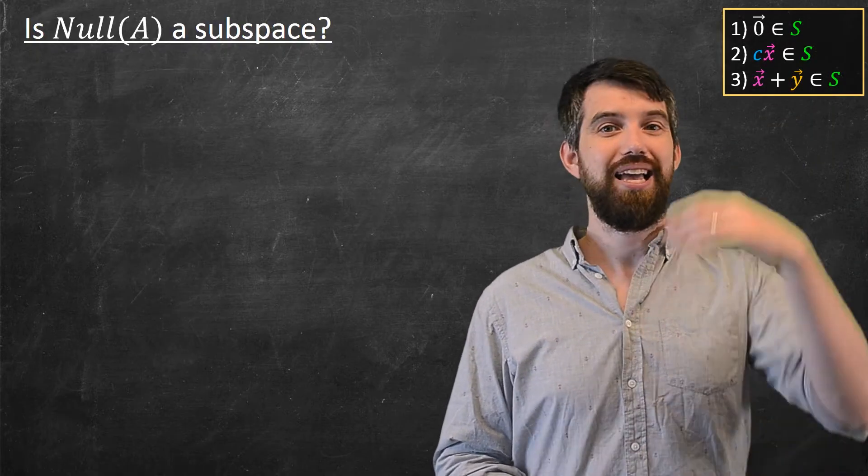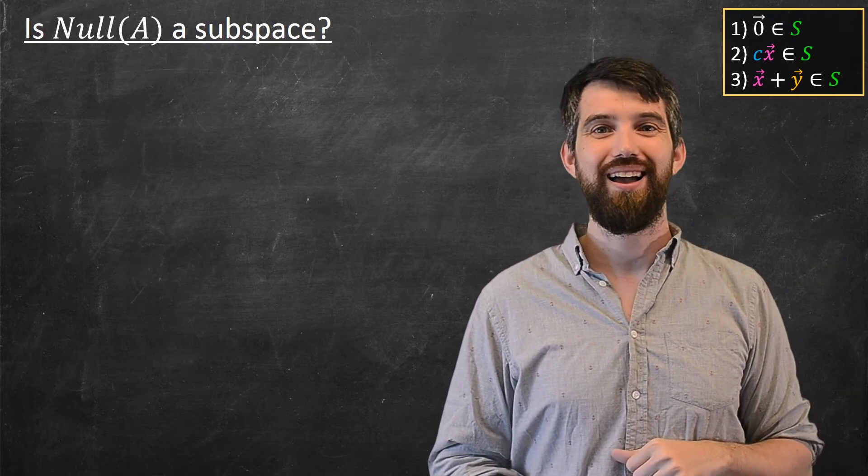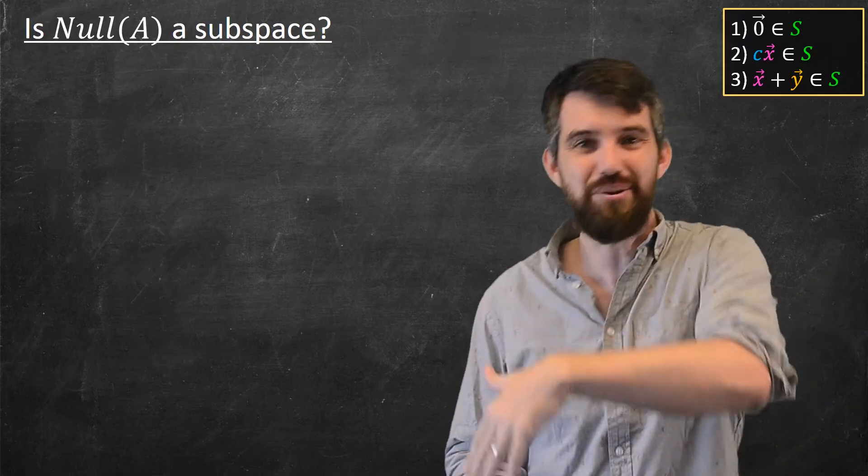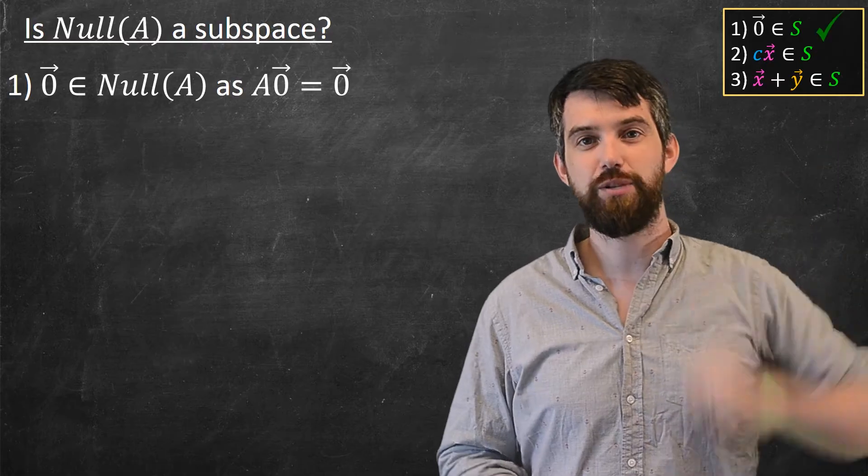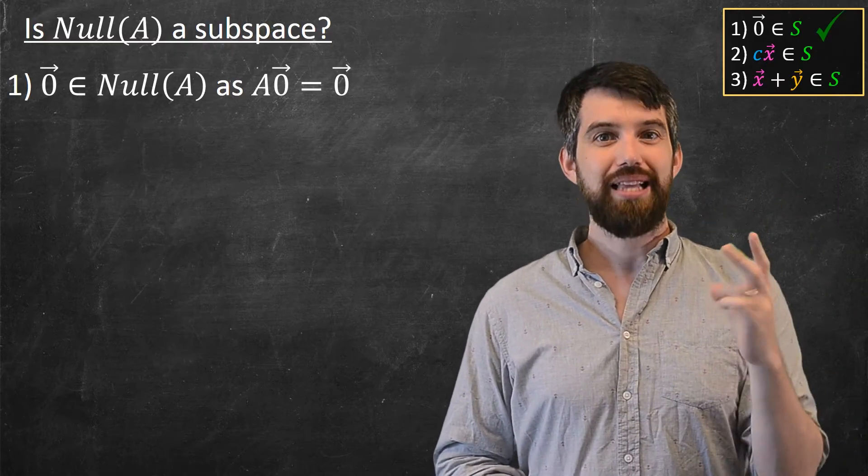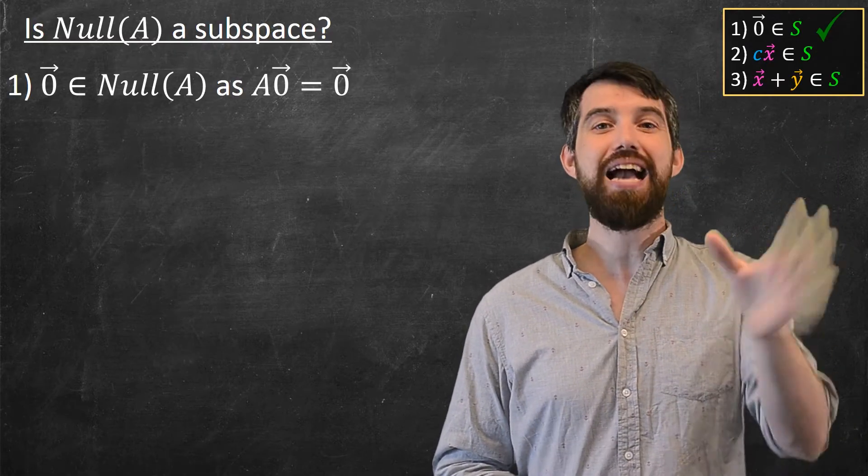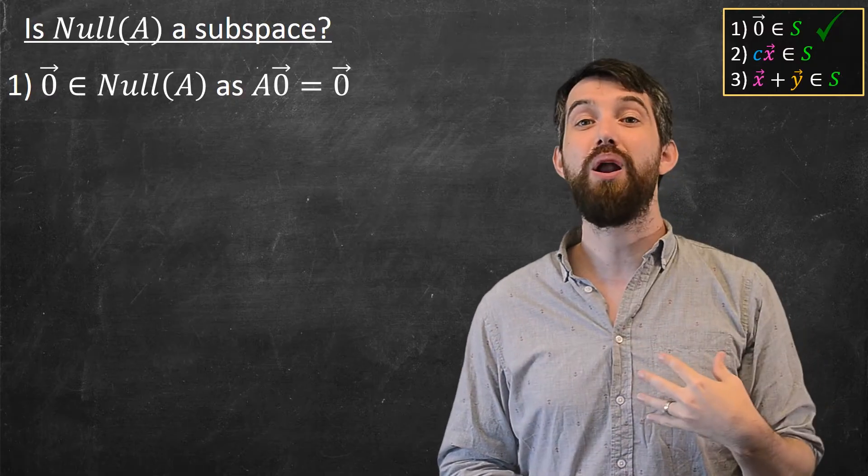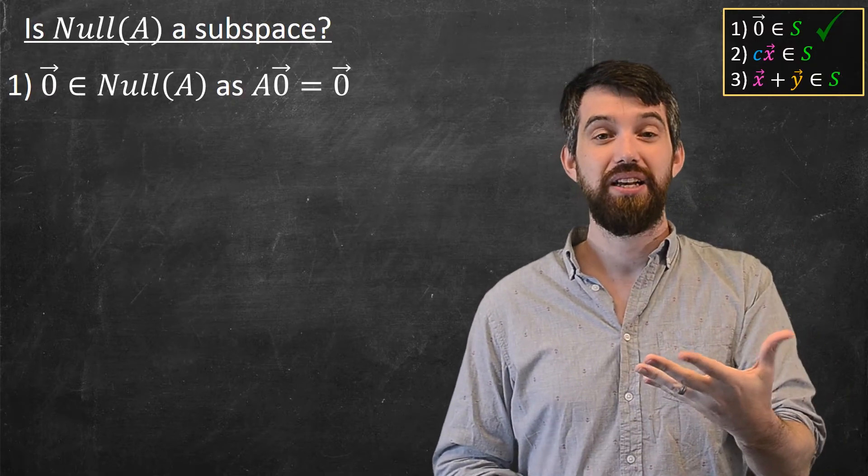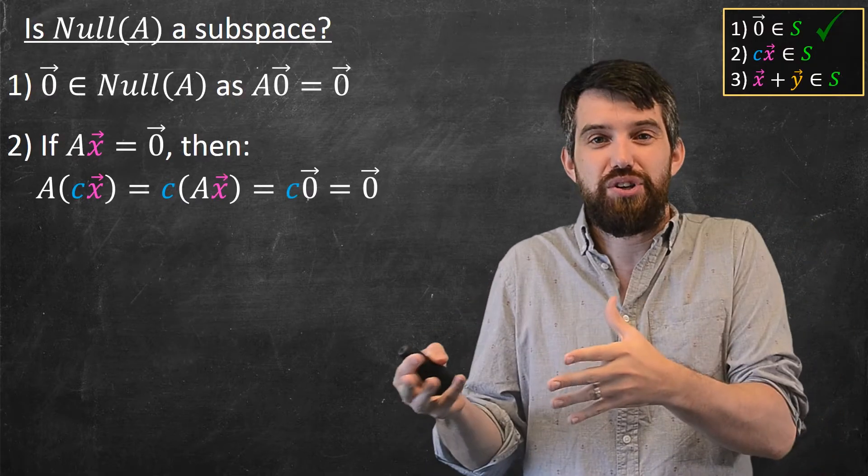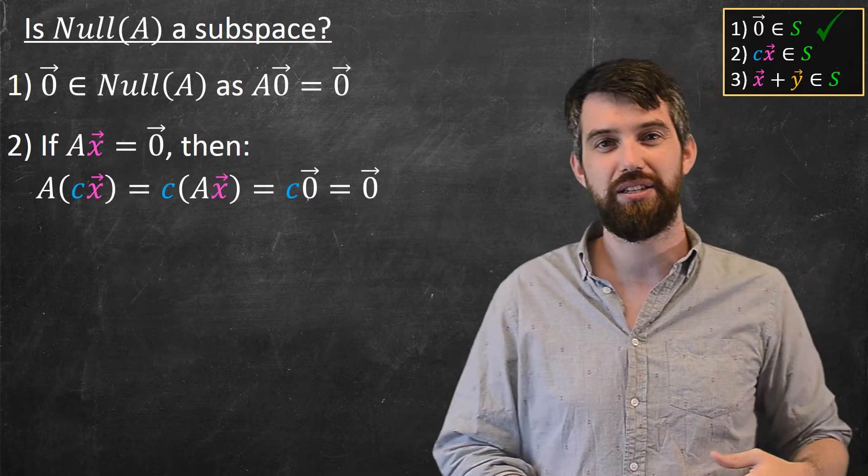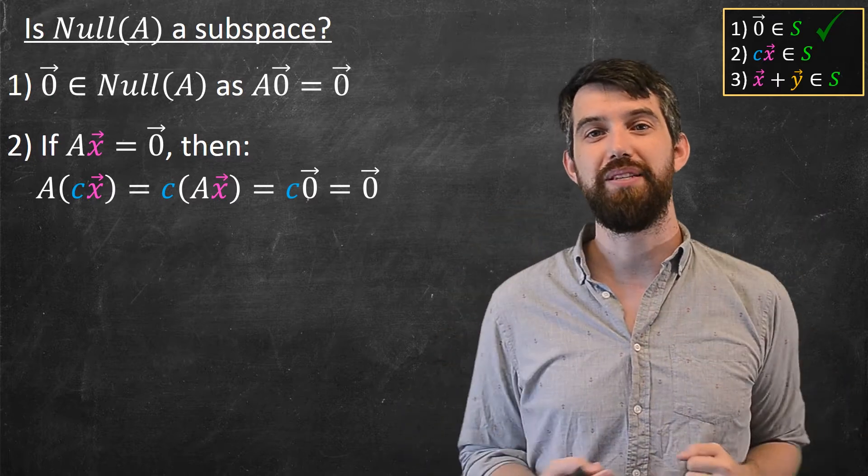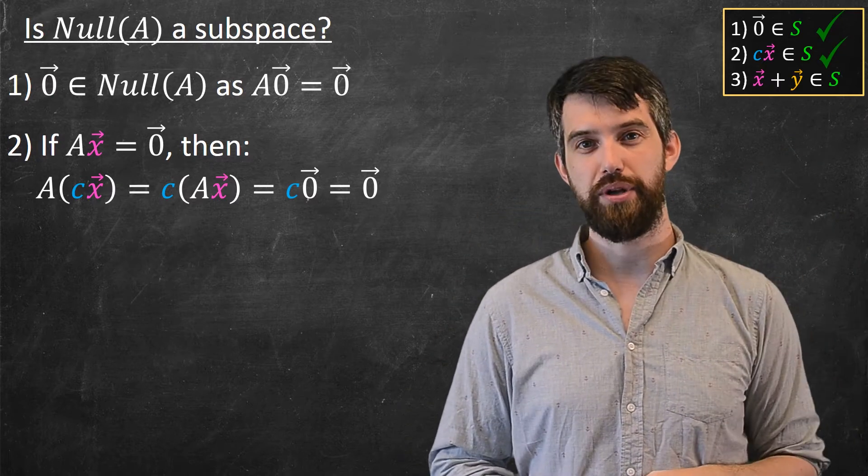Is the zero vector in the null space? Well, yeah. A times zero is equal to zero. Zero vector is killed off by A, so there we go. Got the first point. Second point. Let me imagine that Ax equal to zero. And now I would want to look at A times cx. So indeed, if we could do that. If Ax is equal to zero, then A times cx by linearity is c times Ax. So c times zero, which is always going to be zero. So we have the second of these points.